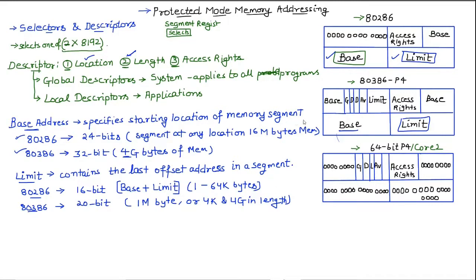There are some important bits you can observe in the 80386 through Pentium 4 descriptor structure. From 80386 until Intel microprocessors through Pentium 4, you can see there are bits labeled G bit, D bit, and AV bit. Similarly, in Core 2 and 64-bit Pentium 4 processors, we also have these bits. These bits have specific uses, and we are going to quickly look at what they specify.